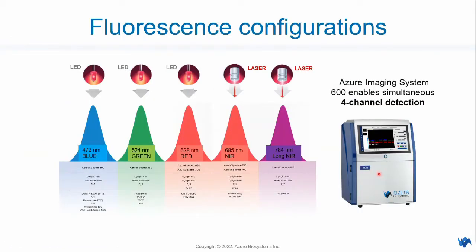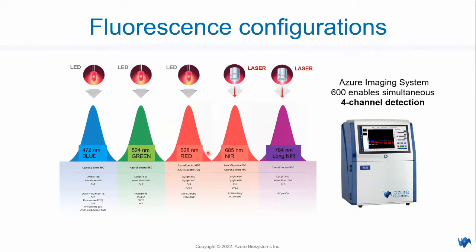Looking at the fluorescence configuration in the Azure Imaging System 600: RGB signals are excited through LED excitation light sources, and near-infrared signals are excited through laser excitation light sources. Even though we have five excitation light sources for fluorescence applications, we do not recommend five-channel simultaneous detection. We recommend four channels because the red channel and near-infrared 680 are too close to each other — there is a high possibility of crosstalk. For fluorescent multiplex western blot, we recommend either red/green/blue plus 784, or any combination except pairing the two red channels together.